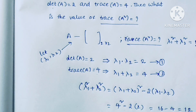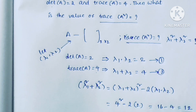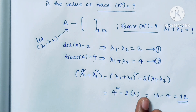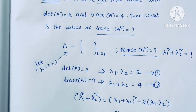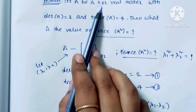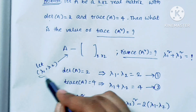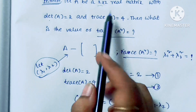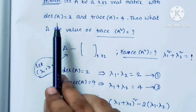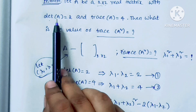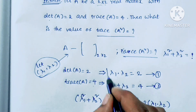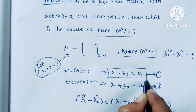So 12 is the answer for the given matrix. In this way you need to find the solution. They gave a real matrix of 2 by 2, so we took lambda 1 and lambda 2 as the eigenvalues. Determinant of A equal to 2, and determinant of A is nothing but the product of the eigenvalues, so product of the eigenvalues equals 2.